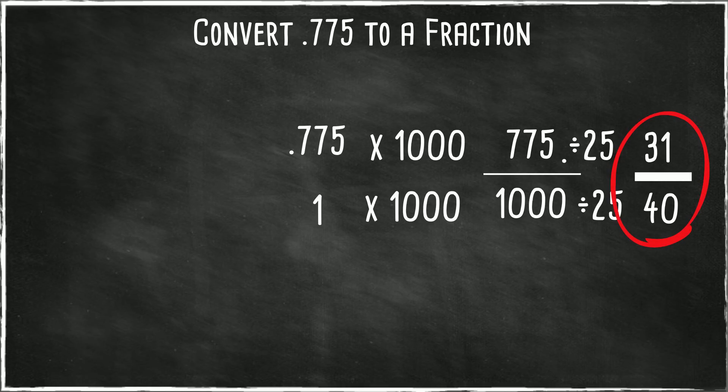So there it is, 775 thousandths as a fraction is 31 over 40.